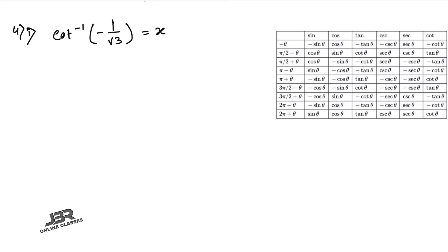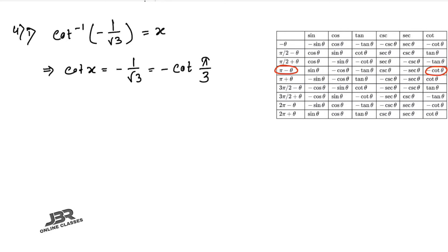Sum number 4.1: cot⁻¹(−1/√3) = x, so cot x = −1/√3. Since cot(π/3) = 1/√3, and using cot(π − θ) = −cot(θ), we write −cot(π/3) = cot(π − π/3) = cot(2π/3). Therefore x = 2π/3.